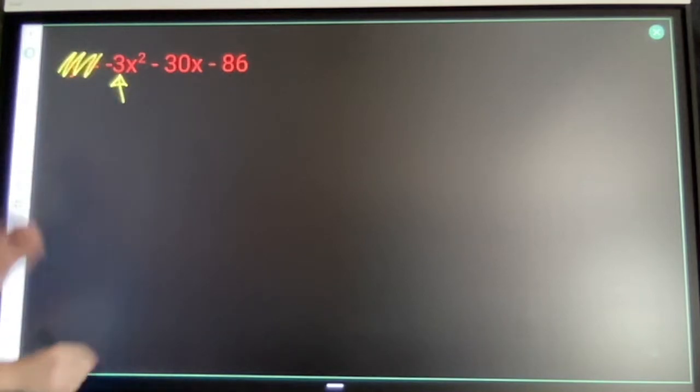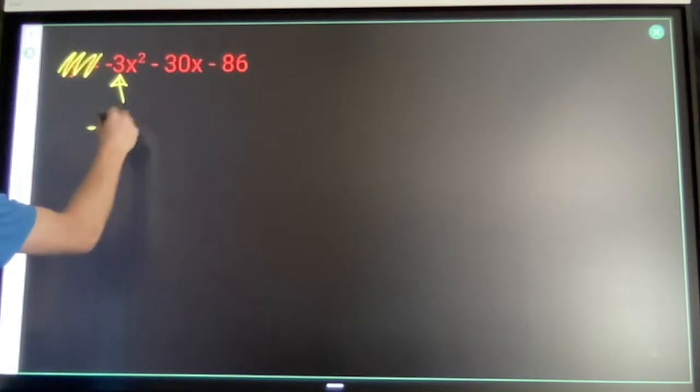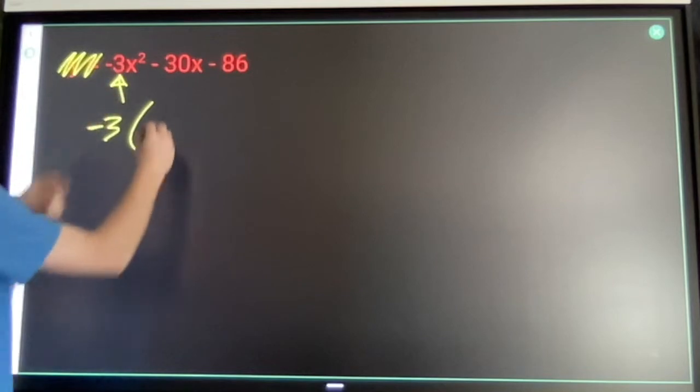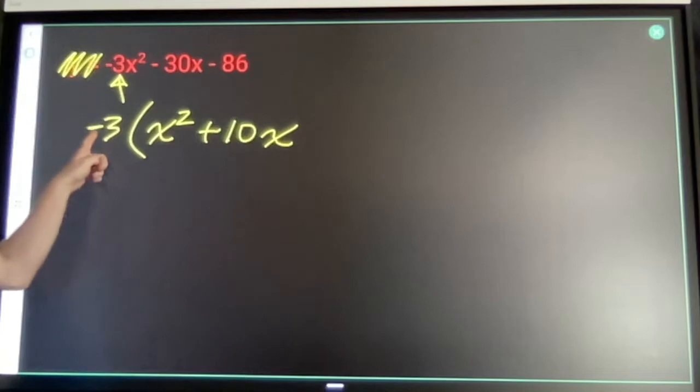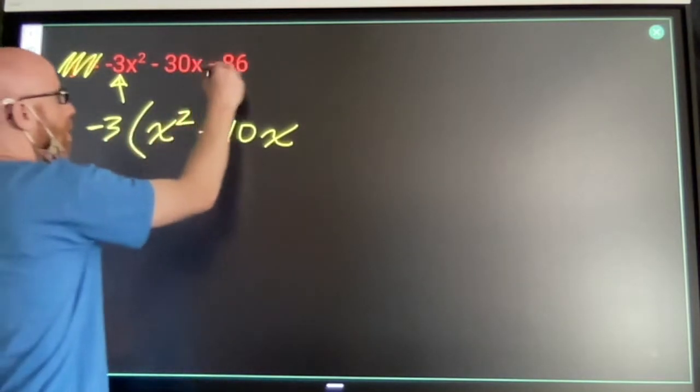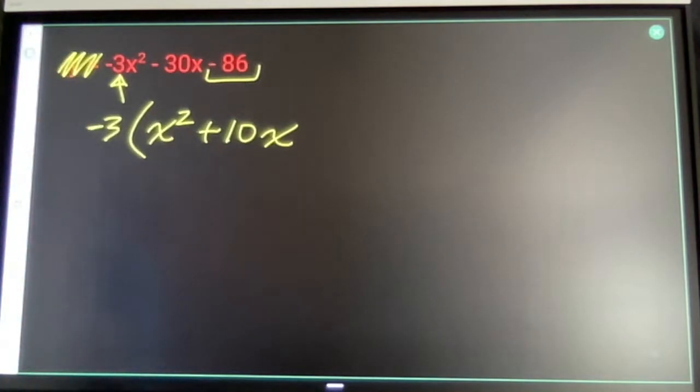Ignore this part. Negative 3x squared plus 10x. We're going to hold off on this minus 86. That's the first move.